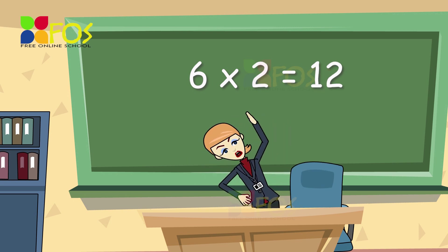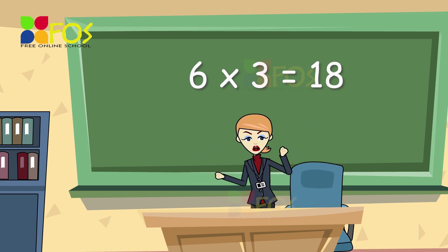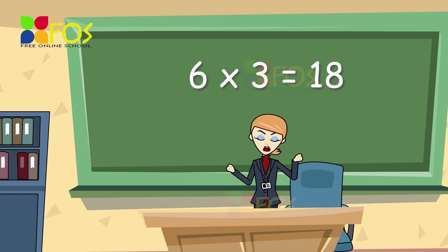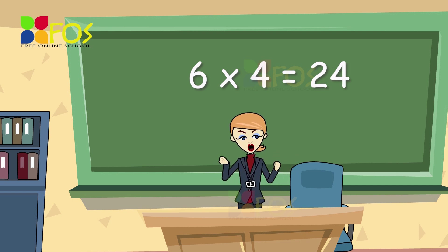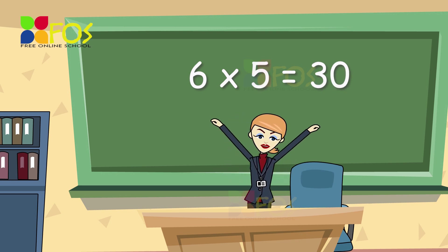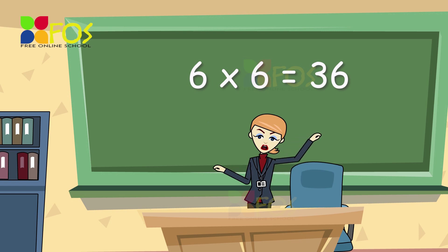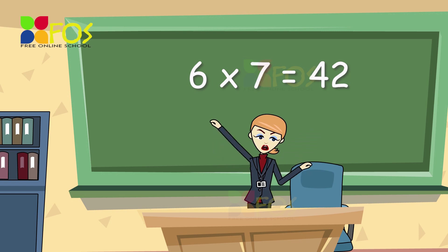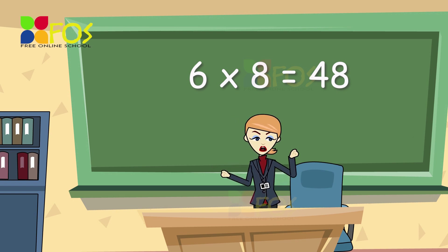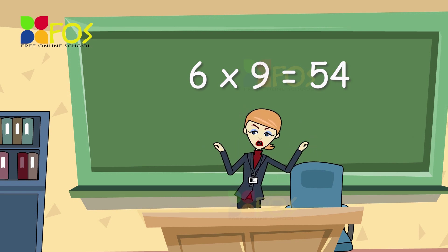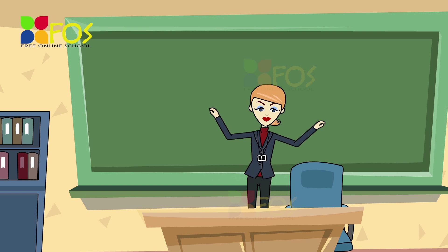6 2s are 12, 6 3s are 18, 6 4s are 24, 6 5s are 30, 6 6s are 36, 6 7s are 42, 6 8s are 48, 6 9s are 54, 6 10s are 60.